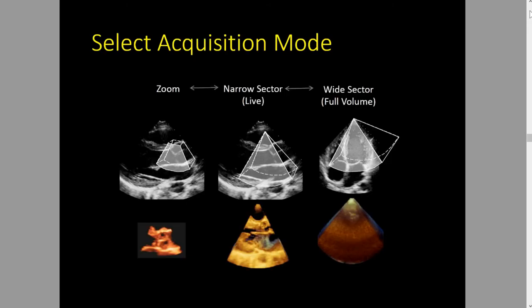Let's go back to the individual modes. Zoom is usually the smallest pyramid that you have. Narrow sector is an intermediate size pyramid, and full volume or wide sector is the largest. It used to be that these volumes were pretty fixed on the machines — once you went into it you couldn't adjust them. But now on most carts they're a starting point: a fast way to get a certain size pyramid that you can then adjust bigger or smaller depending on what you're trying to acquire.